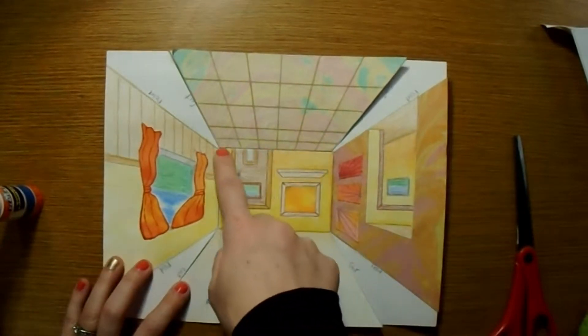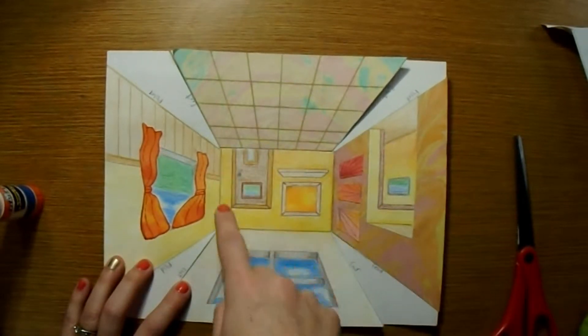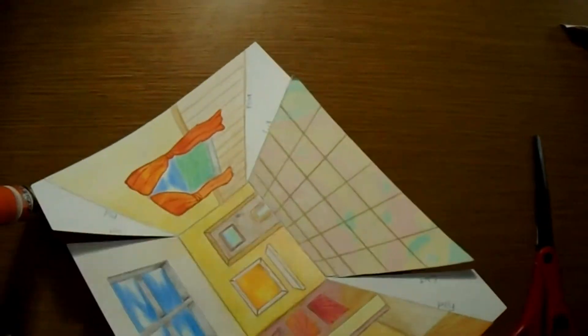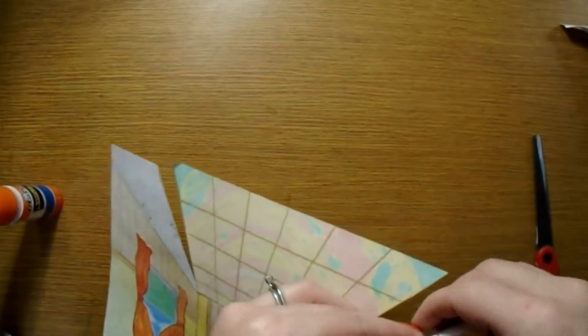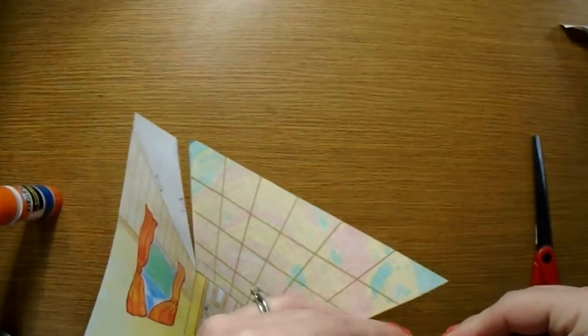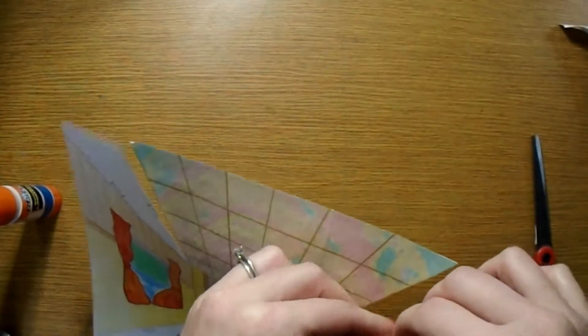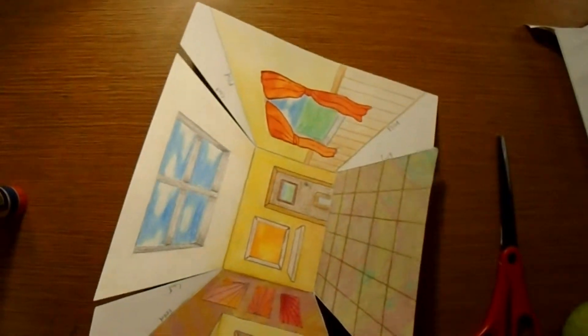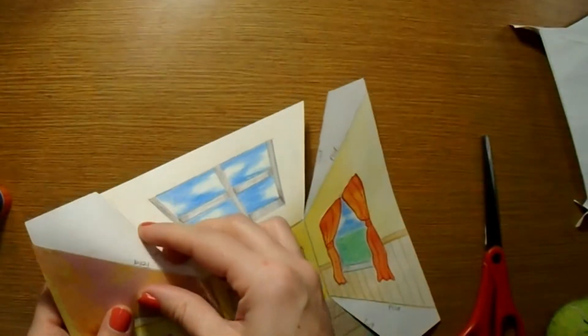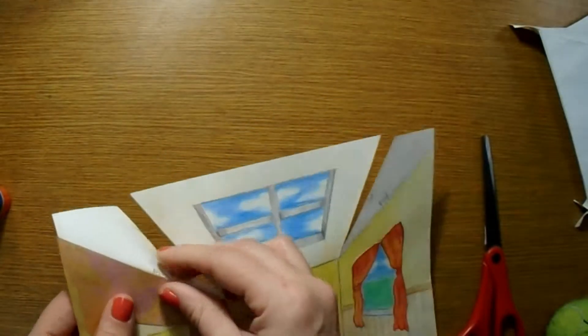When you fold, you want to be as careful as you can to keep that fold right along the edge of the room, because the more precise you are when you fold, the more precise your pyramid is going to look when you glue it together.